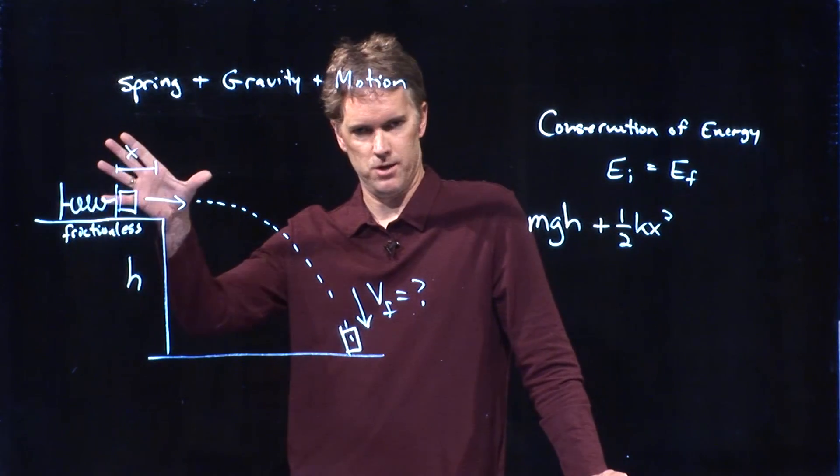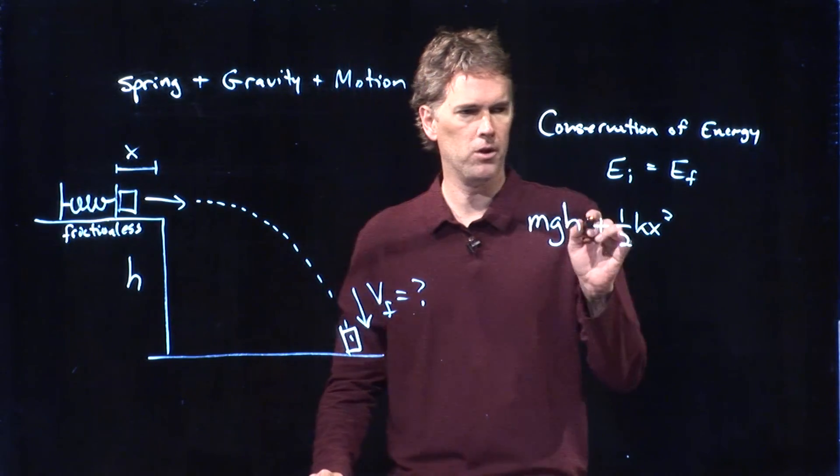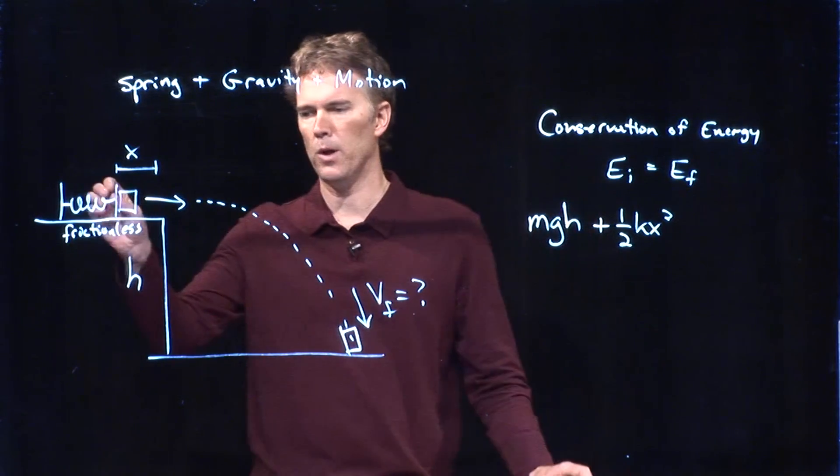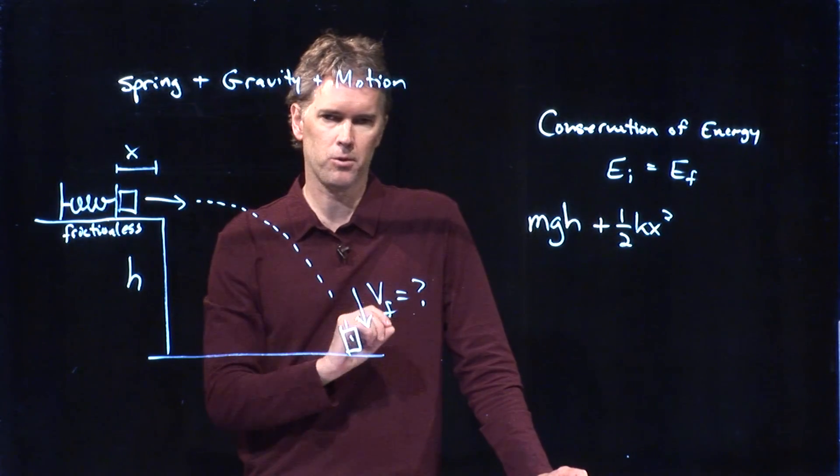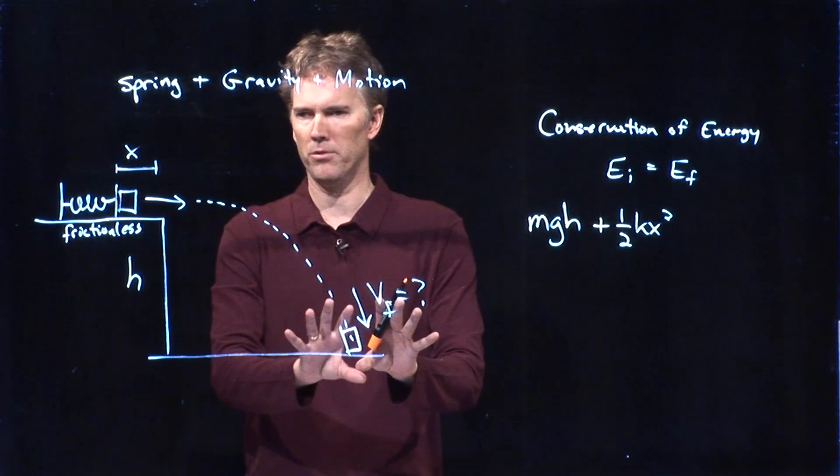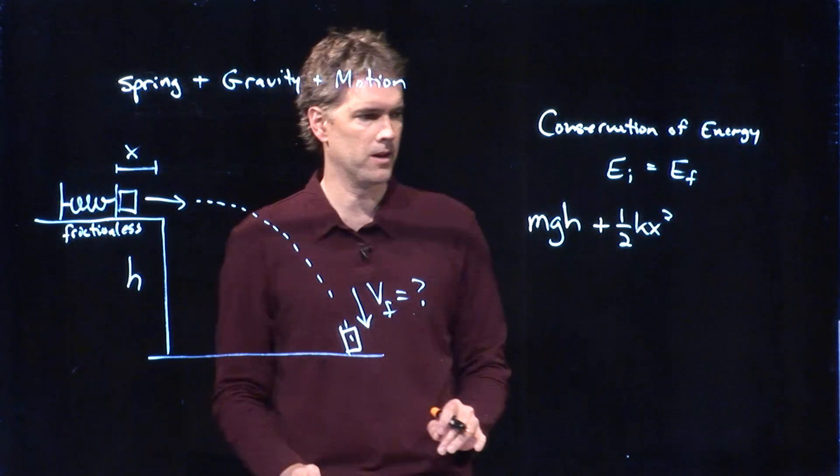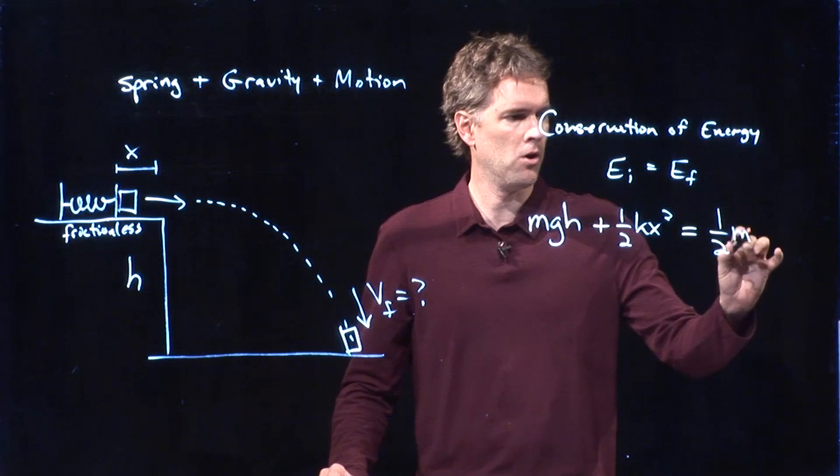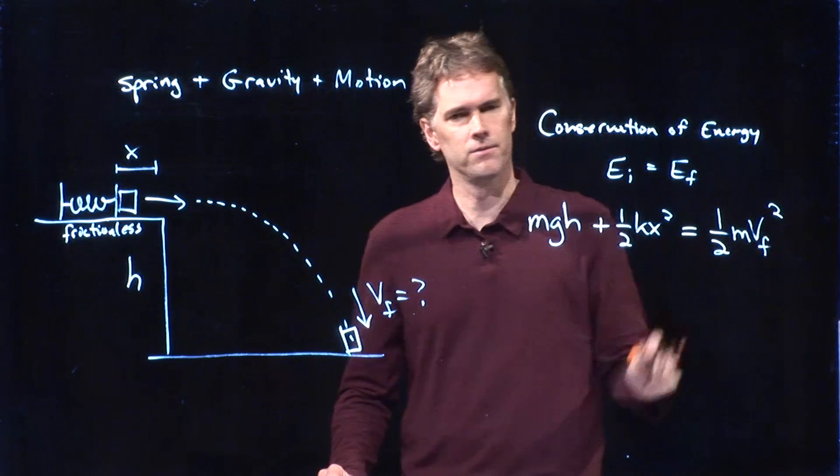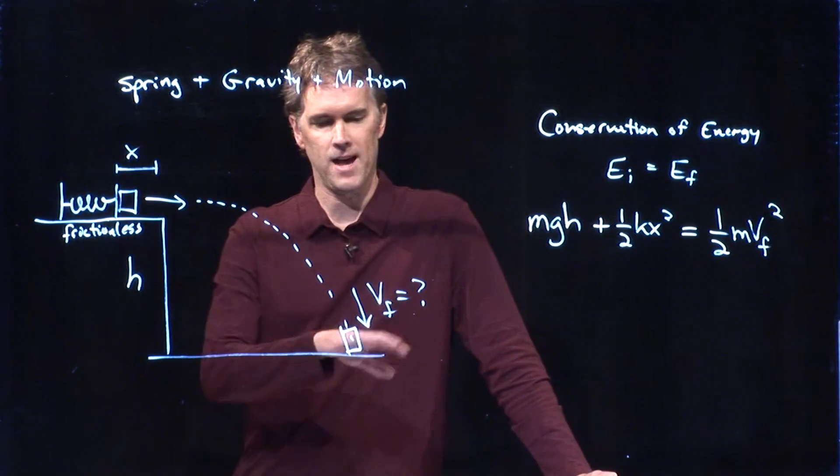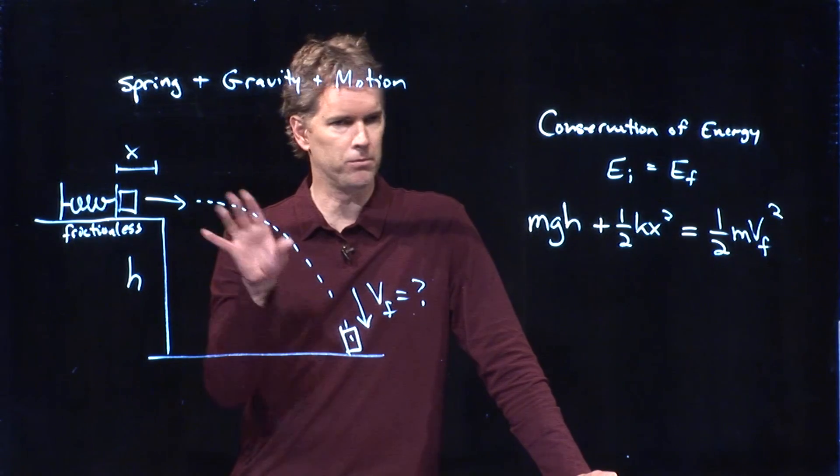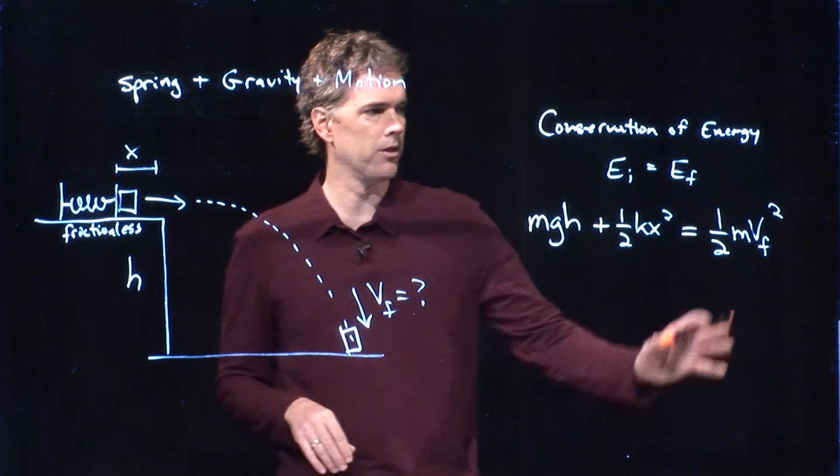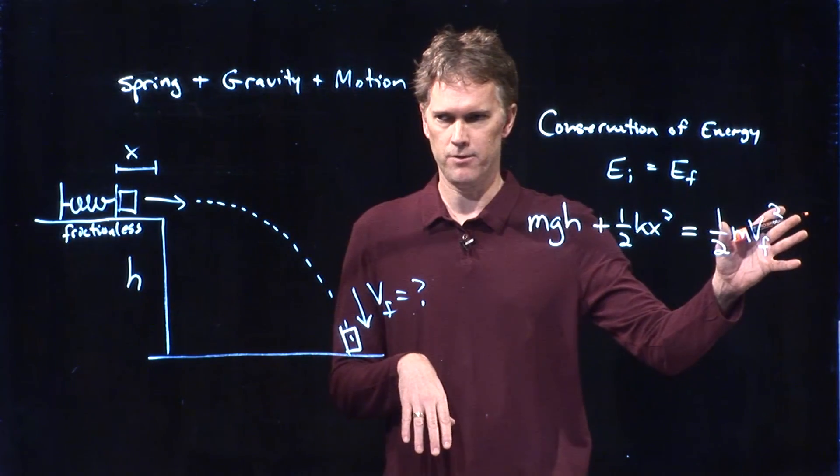And now we're going to launch it. So this is before launch. And now we launch it and it falls to the ground. This can be our final position here. Final position is all kinetic energy. It's down at height zero. Spring is gone. And so this is all we have on the right side of our equation.